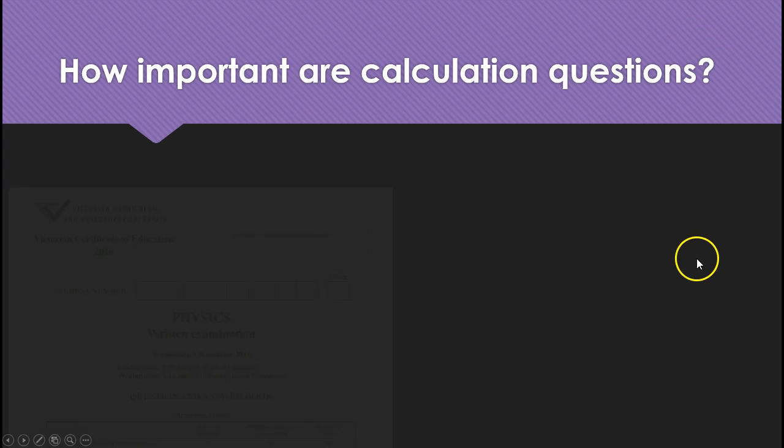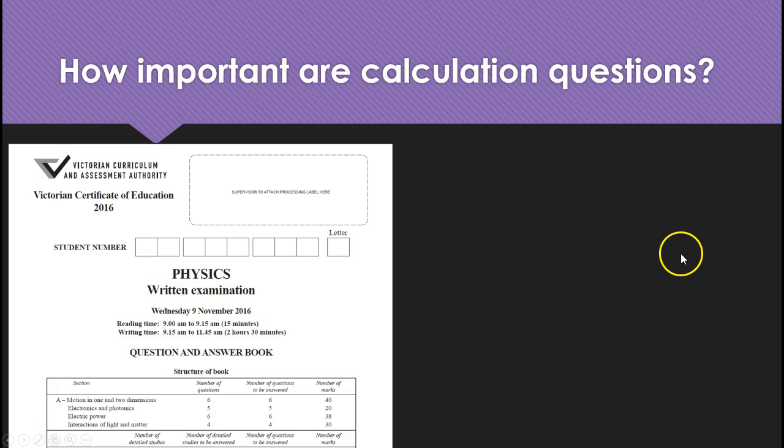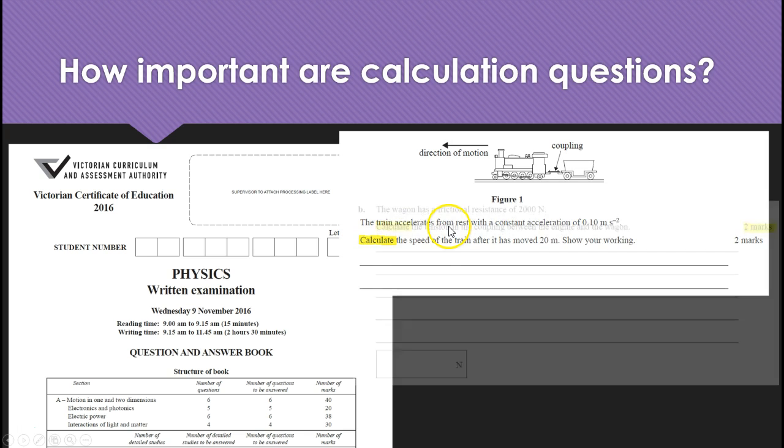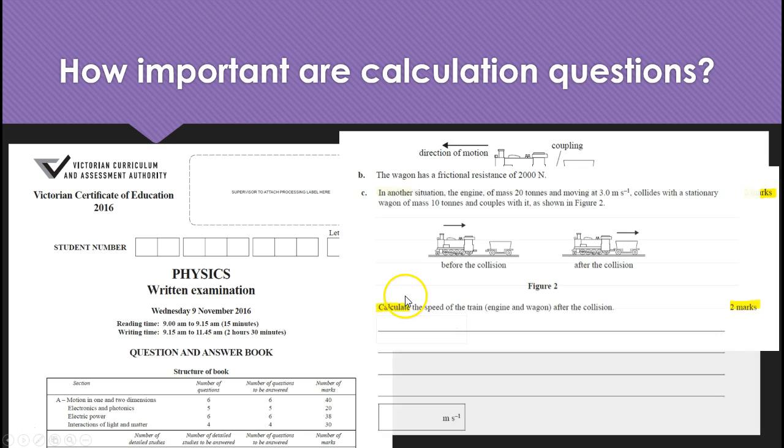Well, I did some analysis of the 2016 VCE physics exam which is a post-16 qualification here in Australia. The first four questions were all calculate, all said calculate in them and they were worth a number of marks.